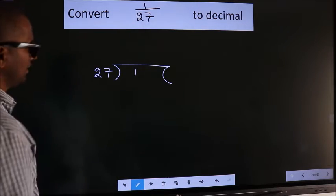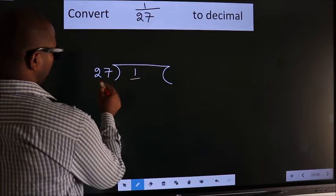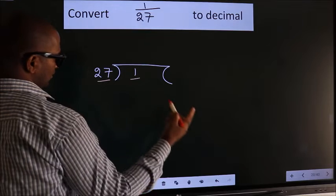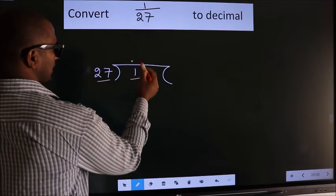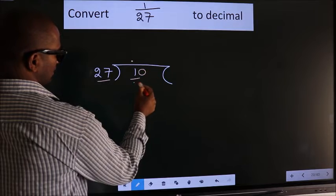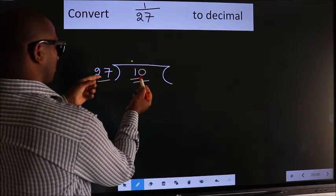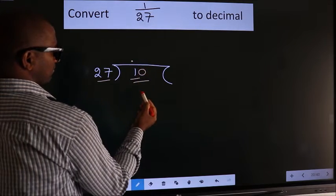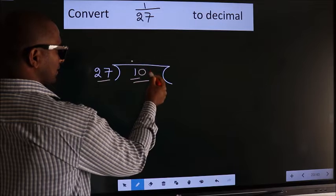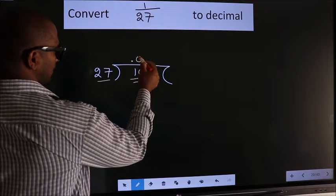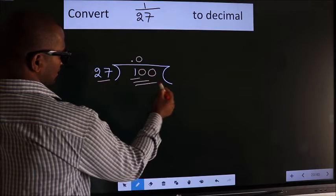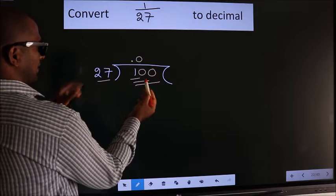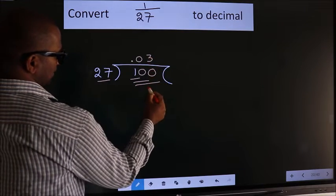Next. Here we have 1, here 27. 1 is smaller than 27. So what we should do is put a dot here, take 0. So 10. 10 is still smaller than 27. We already kept a decimal and taken 0, so take one more 0 here. Put 0 here to get 0 here. So 100. A number close to 100 in the 27 table is 27 threes, 81.